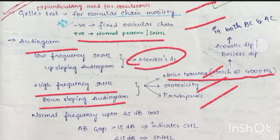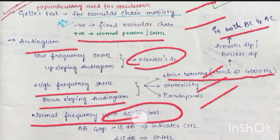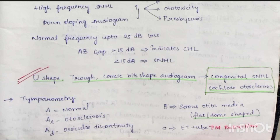The 4000 Hz notch is known as acoustic dip or boilermaker's dip, seen in both bone conduction and air conduction. Frequency up to 25 decibels loss is normal. An air conduction–bone conduction gap greater than 15 decibels indicates conductive hearing loss, whereas less than 15 decibels indicates sensorineural hearing loss.